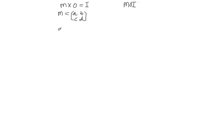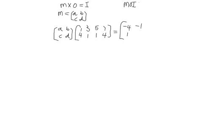So if we take matrix [A, B, C, D] and multiply by the object coordinates — that is (1,4) for A, (3,1) for B, (5,1) for C, (7,4) for D — we should get the image coordinates: (-4,1) for A prime, (-1,3) for B prime, (-1,5) for C prime, and (-4,7) for D prime.